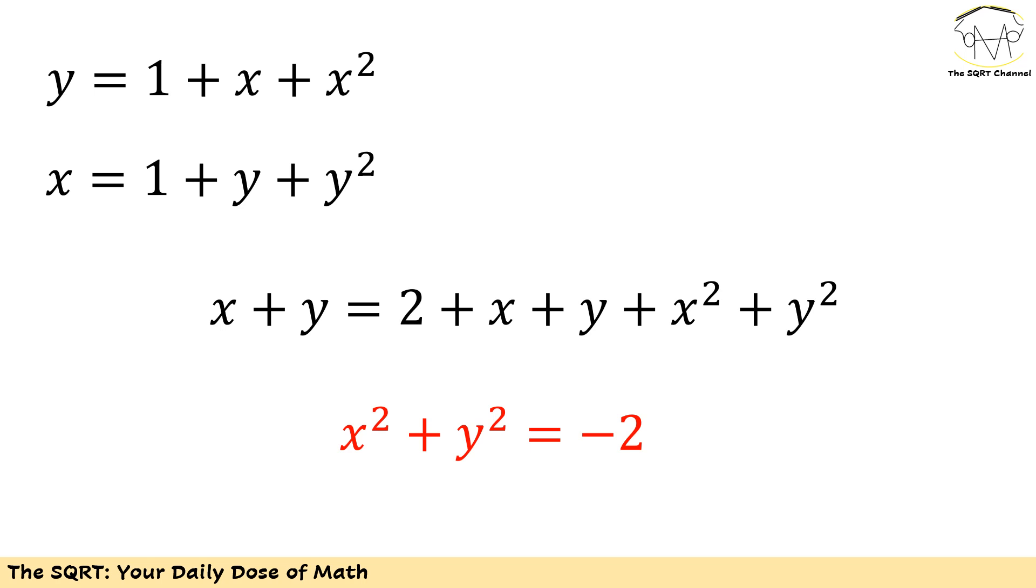I'm going to add these two equations. On the left hand side I simply have x plus y but on the right hand side I have 1 plus 1 which is 2, x plus y which is something I'm going to keep, and x squared plus y squared.